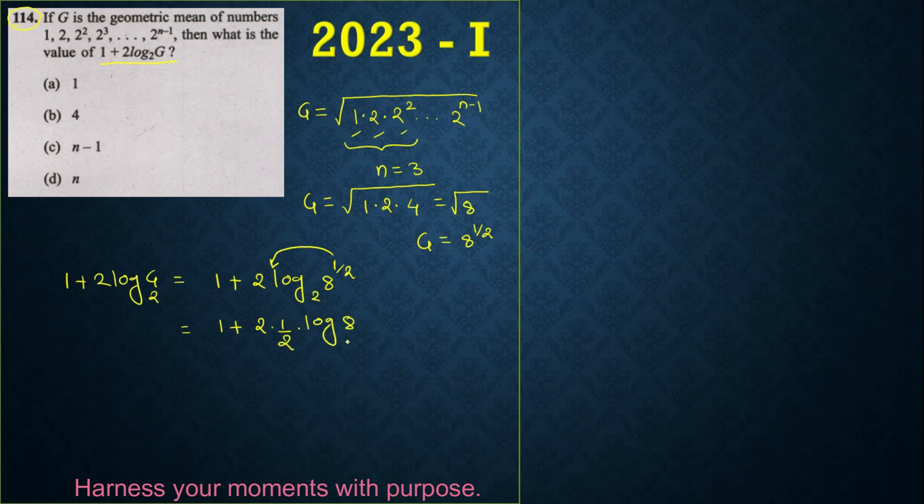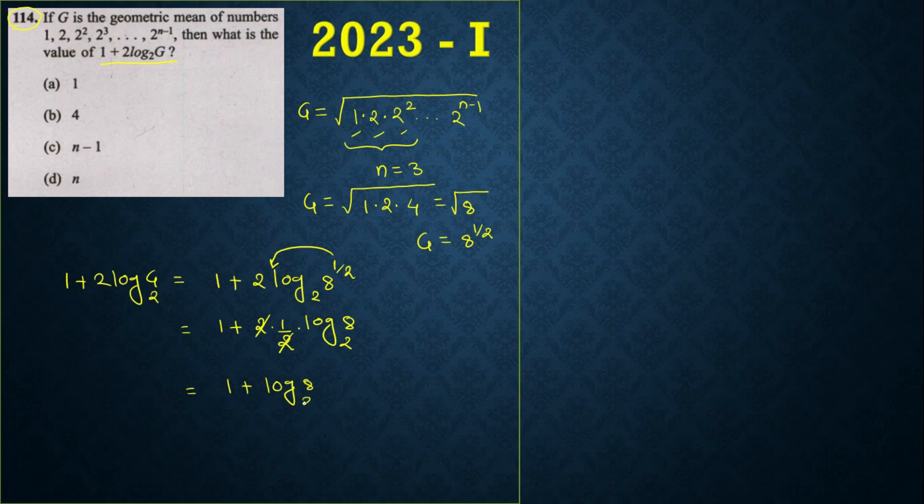So what I am getting is 1 plus log of 8 base 2. And you know the value of log of 8 base 2 is how much? It's nothing but 3.